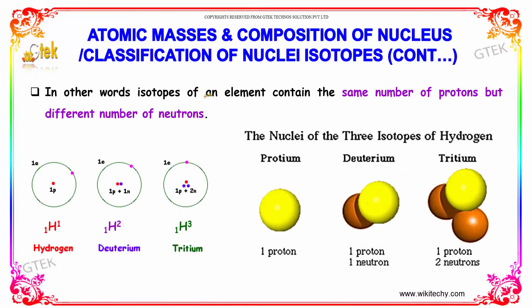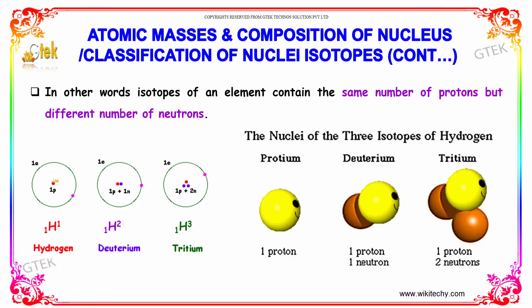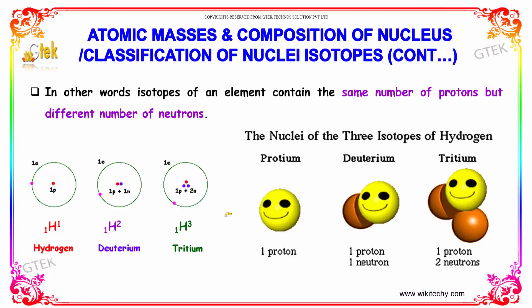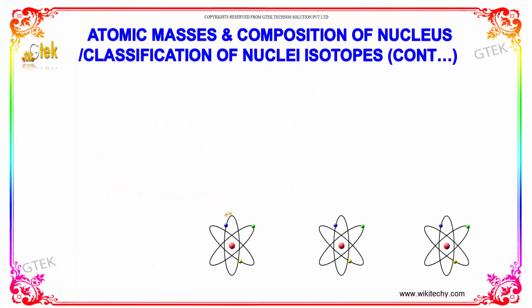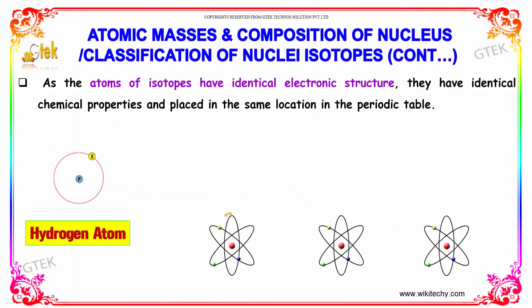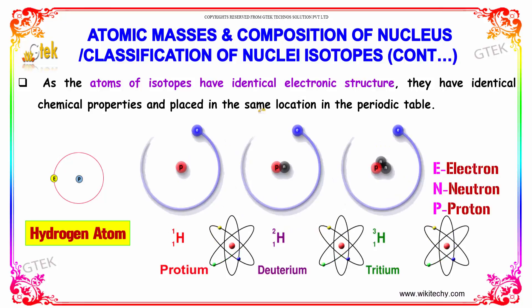In other words, isotopes of an element contain the same number of protons but a different number of neutrons. You are able to see it here. As the atoms of isotopes have identical electronic structure, they have identical chemical properties and are placed in the same location in the periodic table.